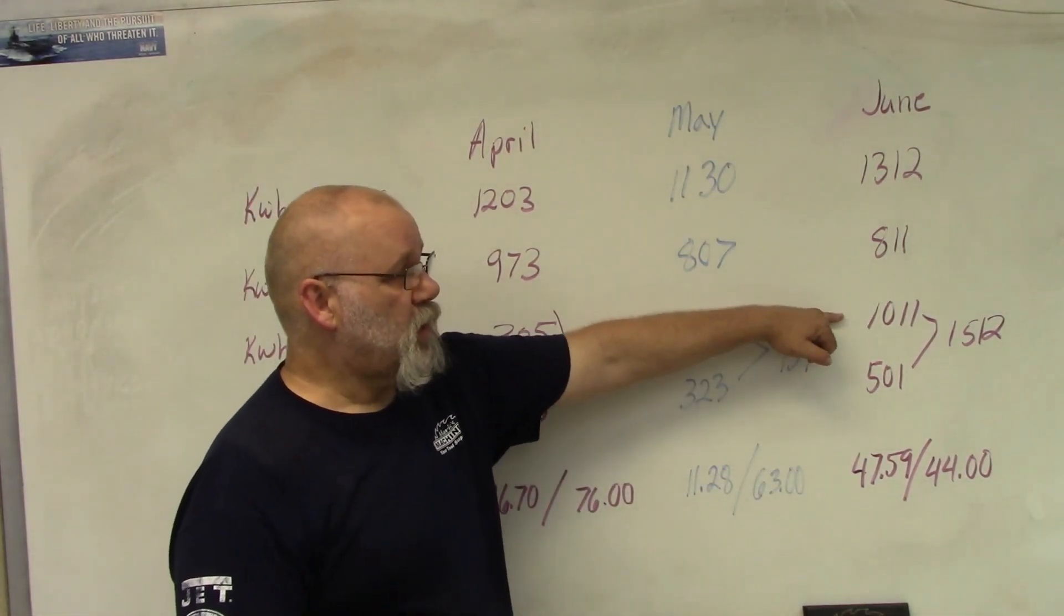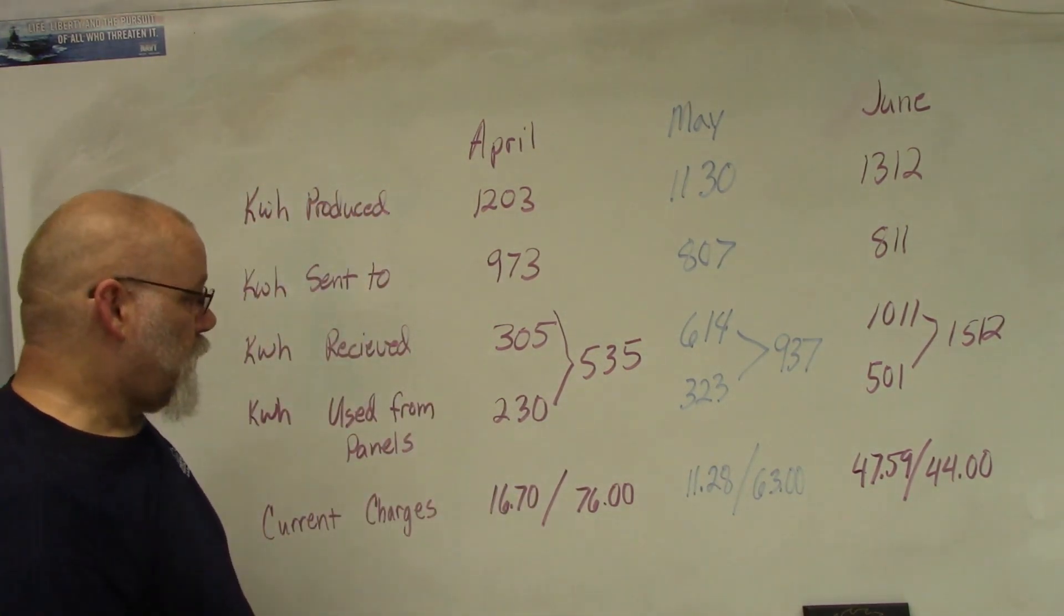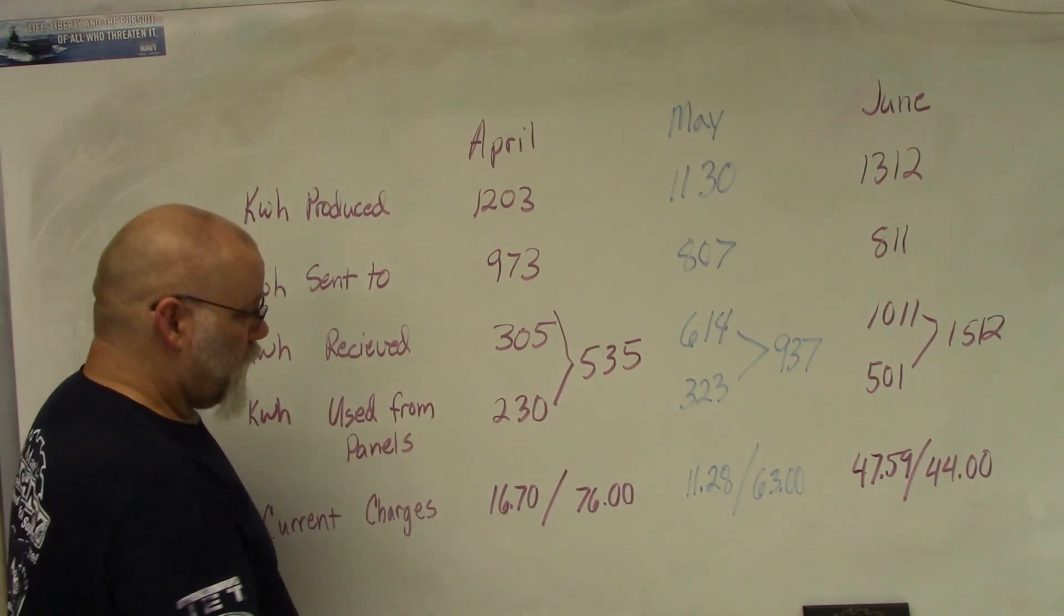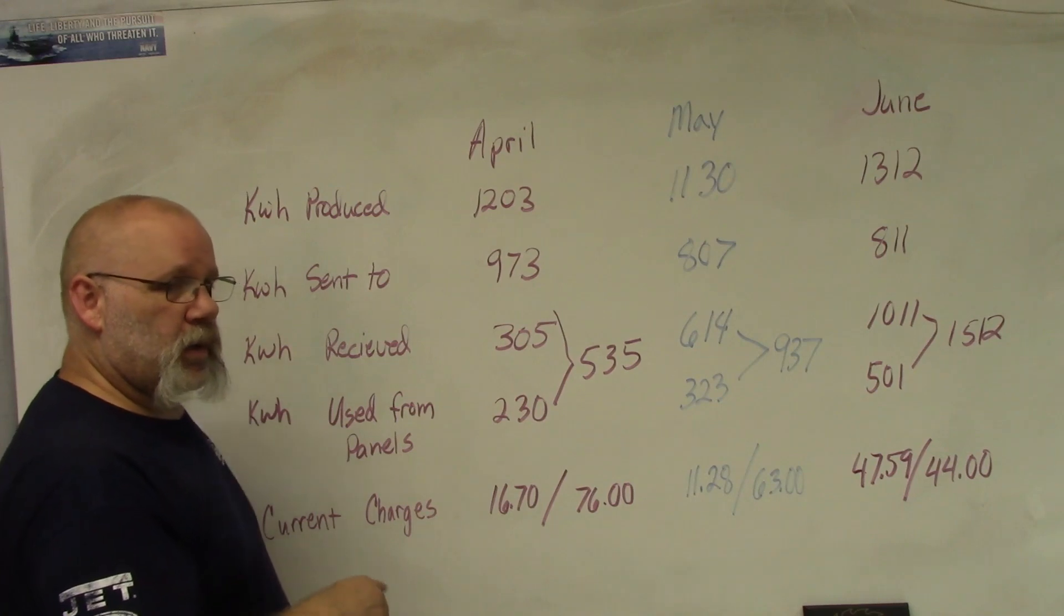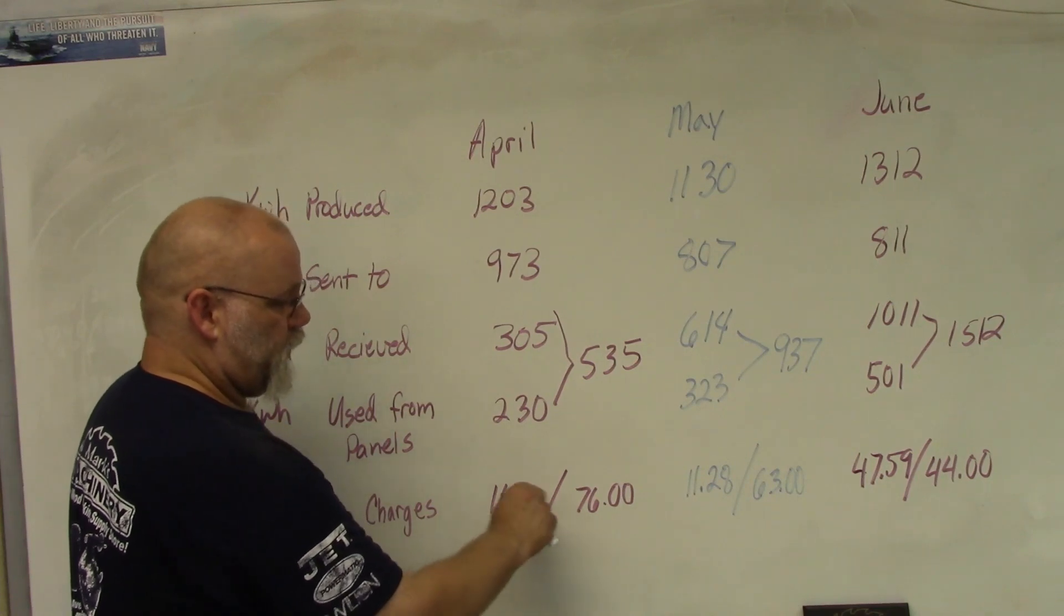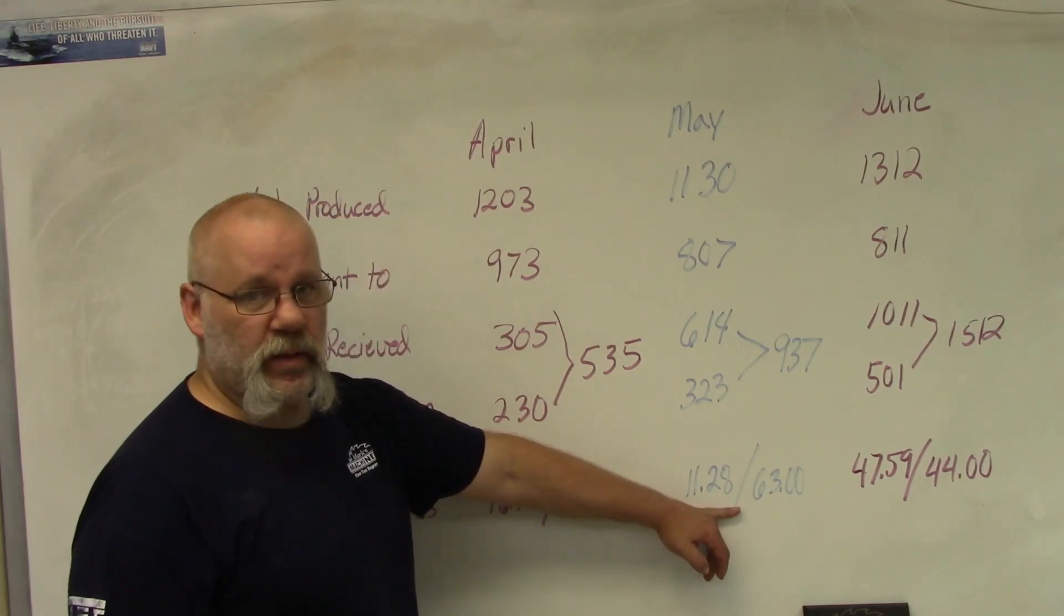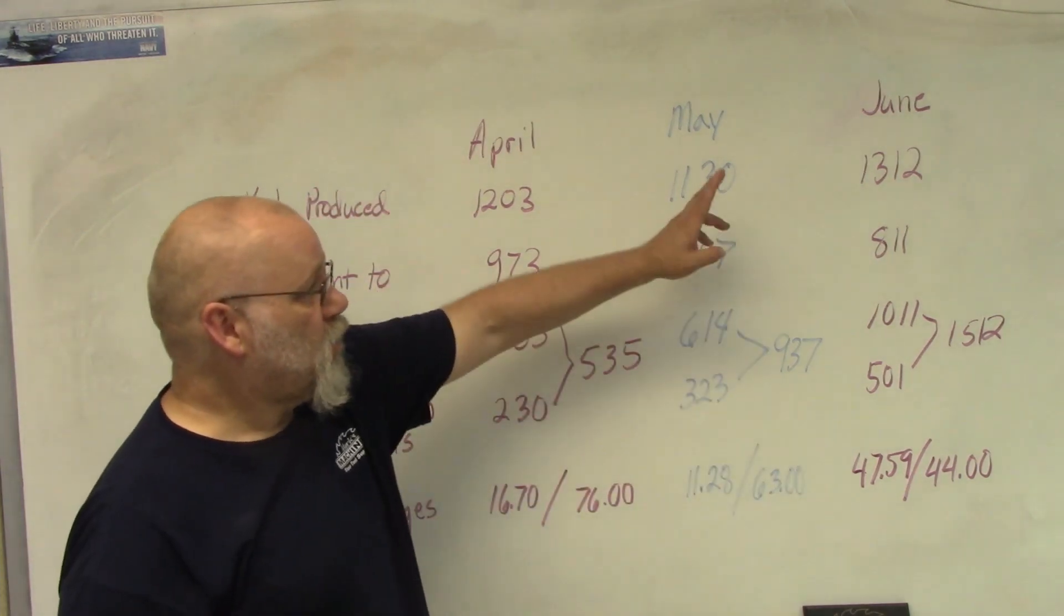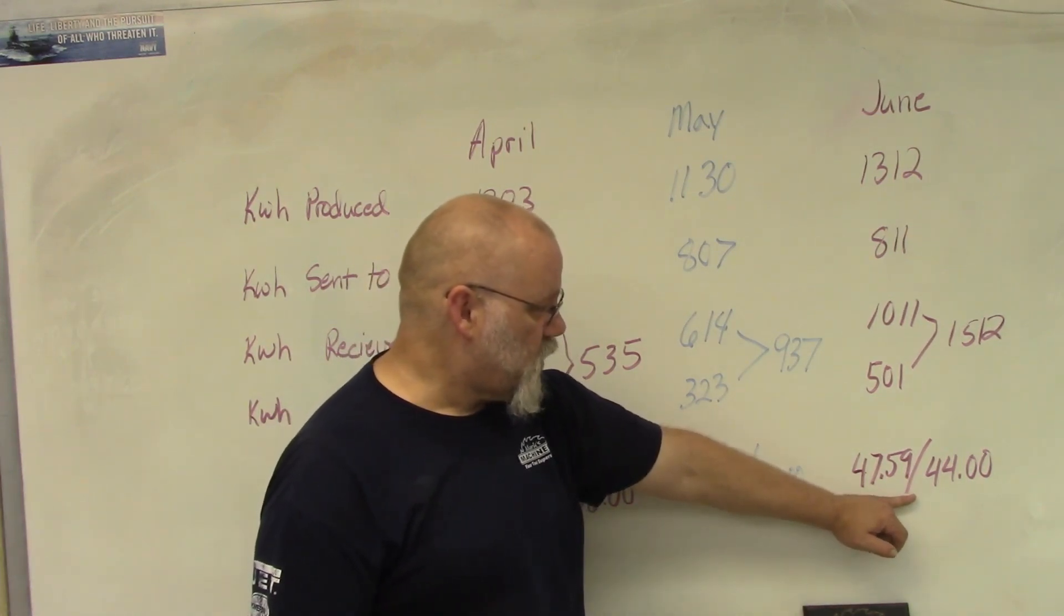So what's it cost us? If we were strictly on paying monthly, our bill in April would have cost us $16.70, but we're on the 12-month average program, so our electric bill is still $76. In May we would have paid $11.28, but our 12-month average we paid $63. Then in June, which was a high month, we would have paid $47.59, but our monthly average is $44.